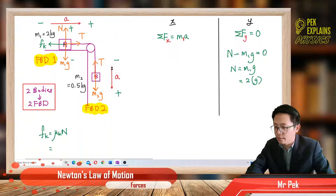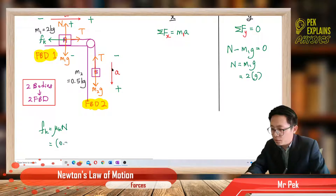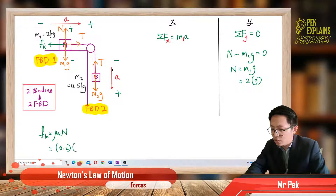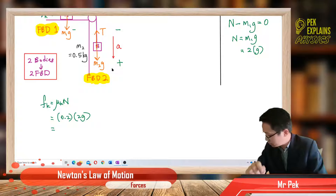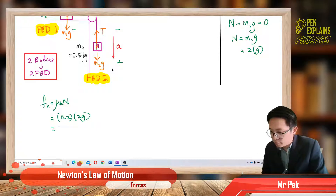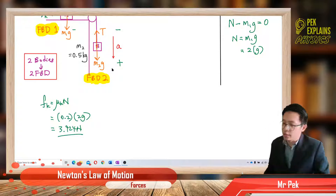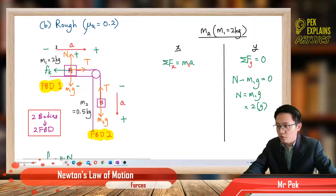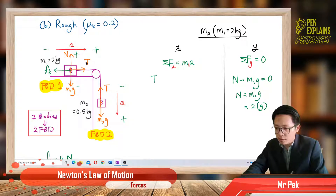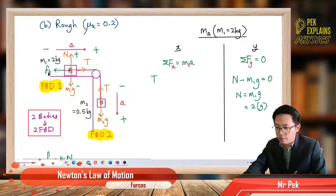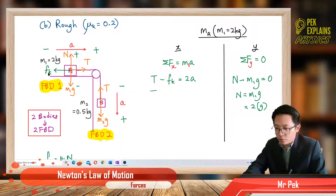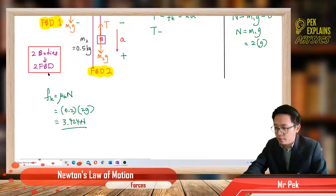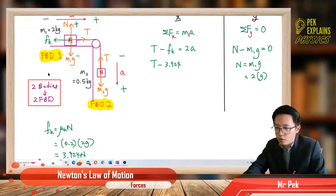Now we can find the friction force: friction = μK × N = 0.2 × 2g = 3.924 N. Now for the X component of mass A: tension is positive (follows acceleration), friction is negative (opposite acceleration). So: tension − 3.924 = 2A. This is equation 1 for Part B.